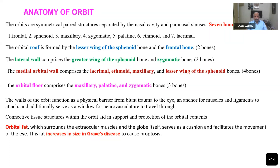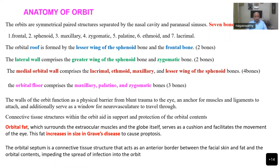The orbital fat which surrounds the extraocular muscles and globe itself serves as a cushion and facilitates movement of the eye. This fat increases in size in Graves' disease, causing proptosis. Sometimes when Graves' disease comes under control with anti-thyroid medications, the proptosis still remains. So the oculoplastic surgeons remove part of this fat to reduce the proptosis and give the patient better vision. The orbital septum is a connective tissue structure that acts as an anterior border between the facial skin and the orbital contents, impeding the spread of infection into the orbit.